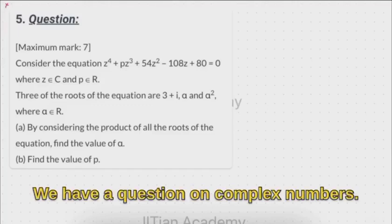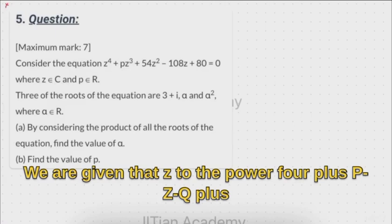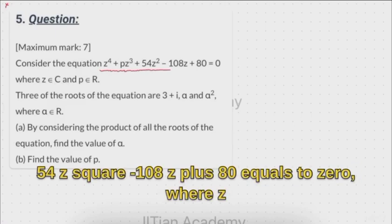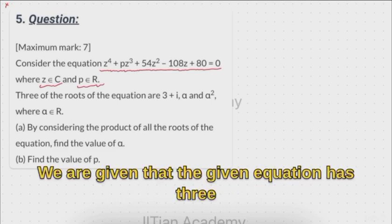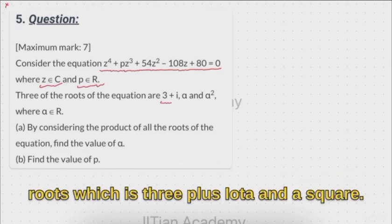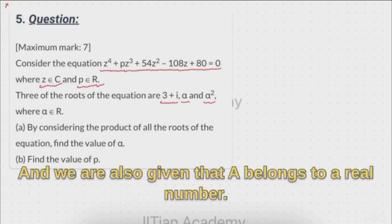Hello learners, welcome to the solution of this question. This question is on complex numbers. We are given that z raised to power 4 plus p z cubed plus 54 z squared minus 108 z plus 80 is equal to zero, where z belongs to complex numbers and p belongs to real numbers. We are also given that the equation has three roots: 3 plus iota, a, and a squared, where a belongs to real numbers.